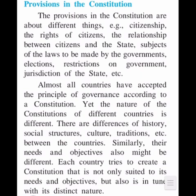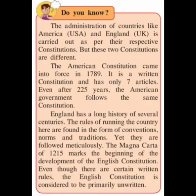Students, do you know that the administration of countries like America and England is carried out as per their respective constitutions? But these two constitutions are different. The American Constitution started in 1789. It is a written Constitution and has only seven articles. Even after 225 years, the American government follows the same Constitution.